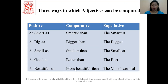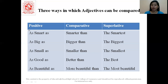Then in the superlative form, we always use the article 'the' before the superlative degree: the smartest, the biggest, the smallest, the best, the most beautiful. So remember: positive degree uses 'as...as'; comparative degree adds '-er', changes the word, or adds 'more', followed by 'than'; and superlative degree uses 'the' before the superlative form.